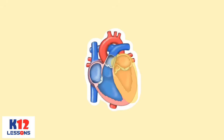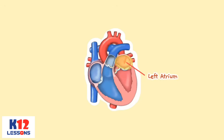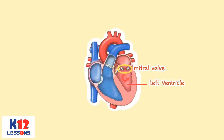The left side of the heart operates at the same time as the right side. The pulmonary vein empties oxygen-rich blood from the lungs into the left atrium of the heart. As the atrium contracts, blood flows from the left atrium into the left ventricle through the open mitral valve. When the ventricle is full, the mitral valve shuts.